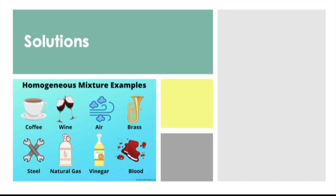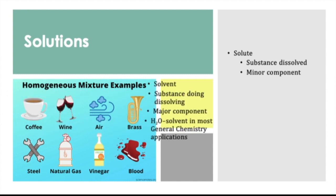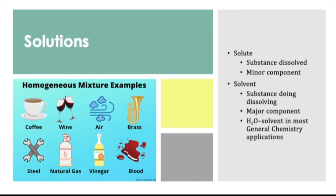In solutions, we have two components. The first one is the solute, which is the substance that is dissolved — we call this the minor component. On the other hand, we have the solvent, which is the substance doing the dissolving and this is the major component. In most general chemistry applications, water is the solvent that we use, that's why we call it the universal solvent.